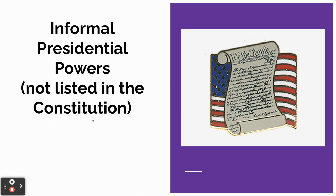The other type of powers are called informal powers. These are powers that are not specifically mentioned in the Constitution, but they're powers that presidents have grown into nonetheless. The important differentiation is: formal powers can be found in the Constitution, informal powers are not found within the Constitution. We're going to look at specific examples of both.